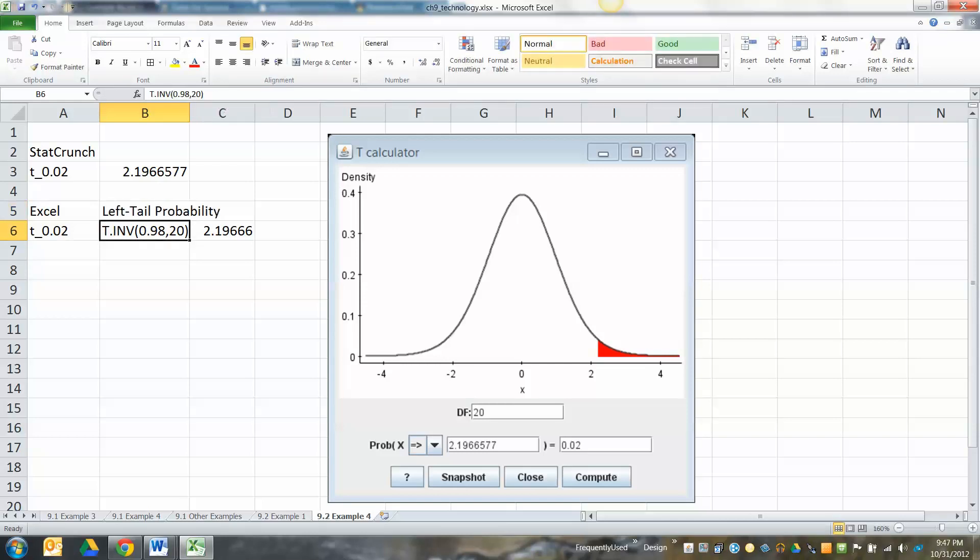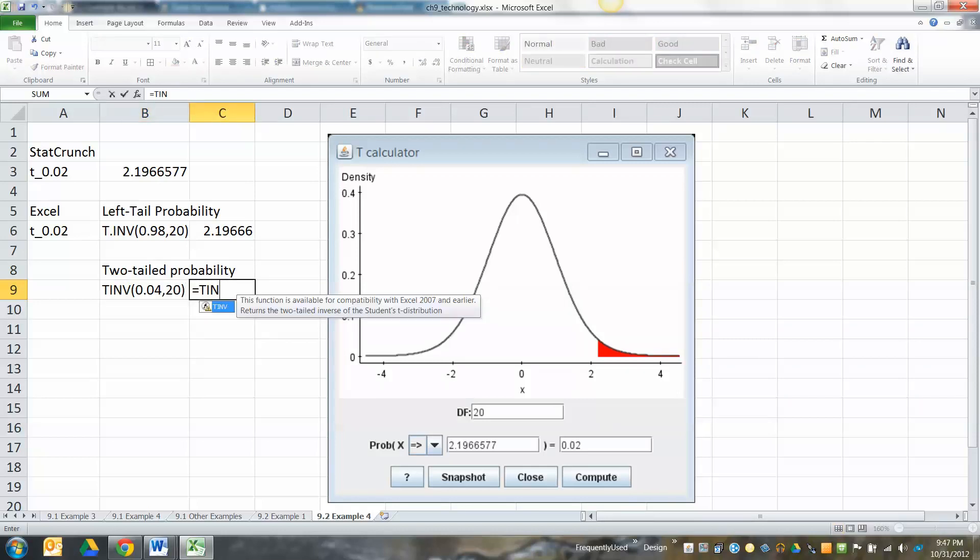It treats everything like it has two tails. So what you have to do is T.INV 0.04, comma 20. They made everything so that it was two-tailed automatically, so if you want to get the right number, you have to say okay, this is 0.02 so the other one would be 0.02 - that's 0.04 together.